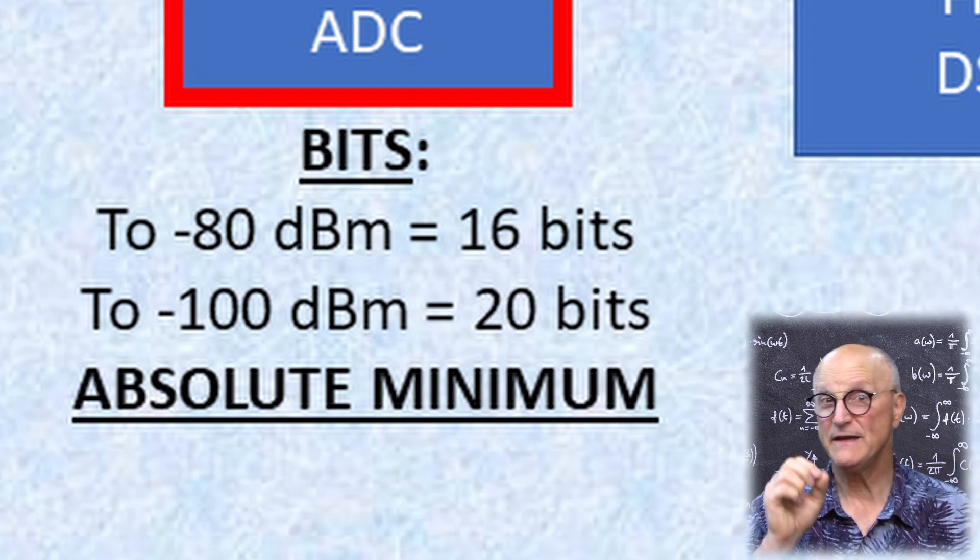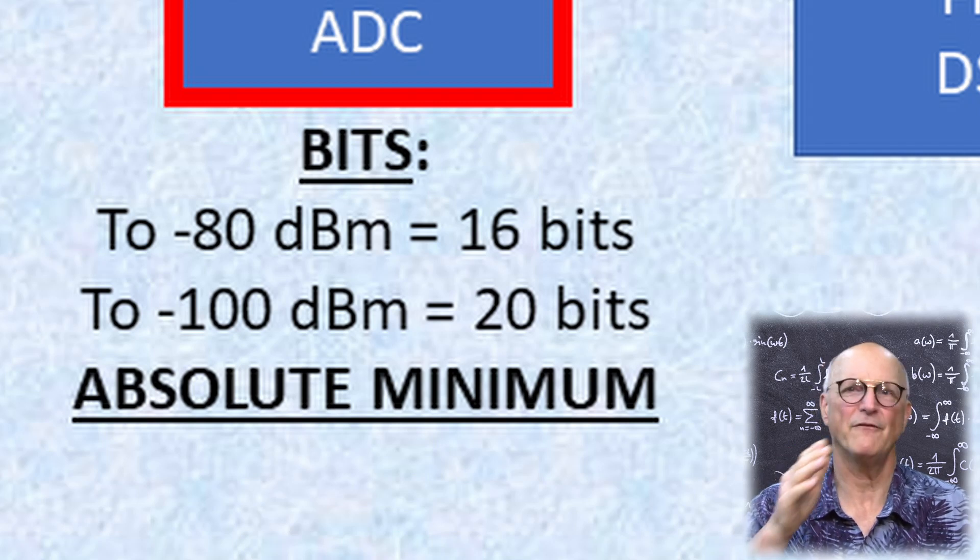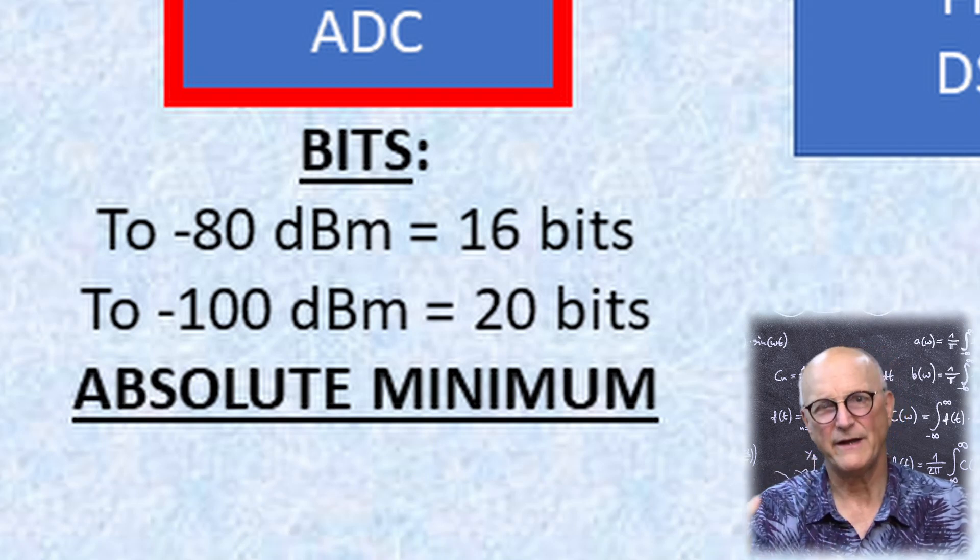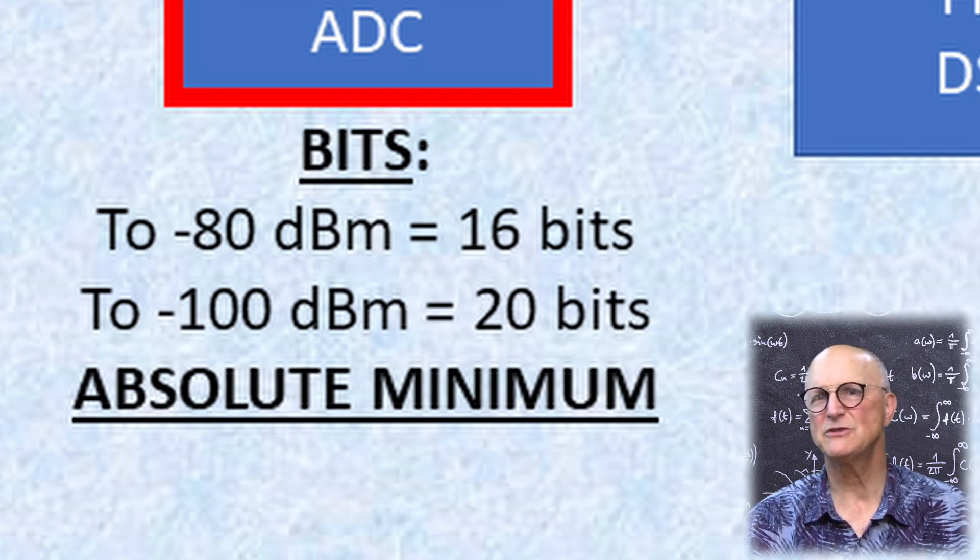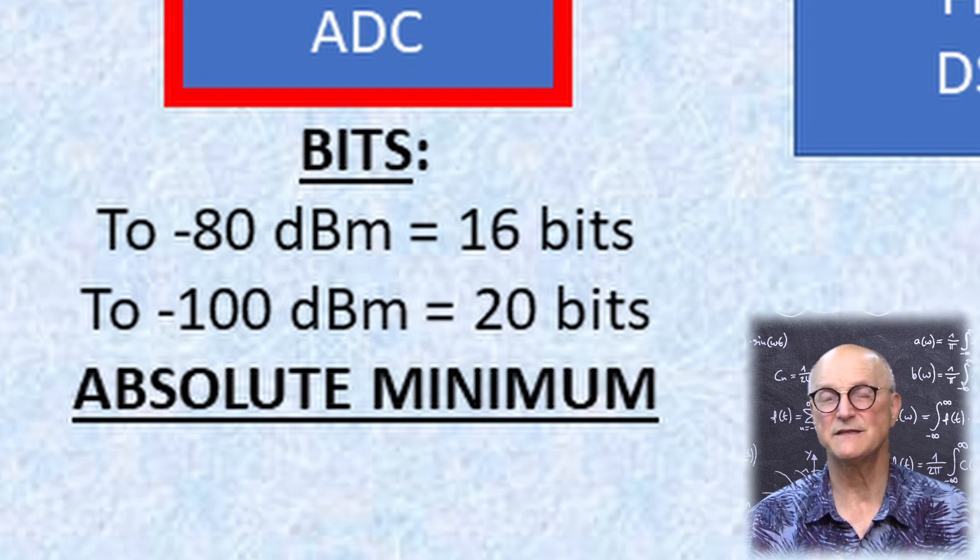Now this is with the lowest significant bit representing a level of minus 80 or minus 100 dBm. For better resolution of these low-end magnitudes, we would have to add a lot more bits to our ADC.